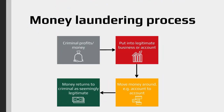First of all, the criminal makes the profits or gets the money. Then the first stage — shown in the red square — is placement. That's placing the money, the proceeds of the crime, into a legitimate business or activity, such as putting it into a shop.